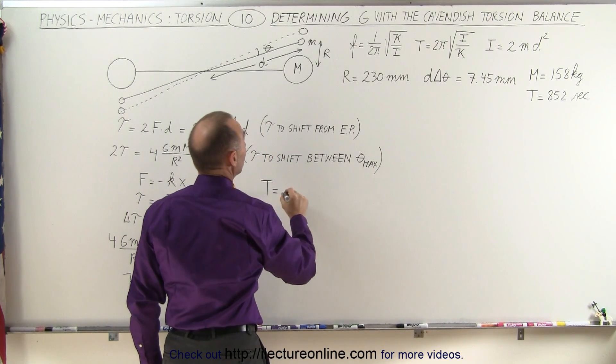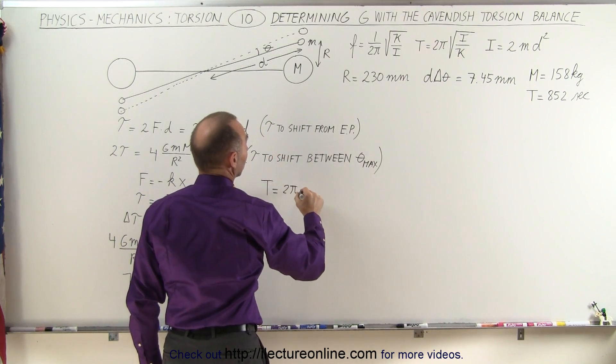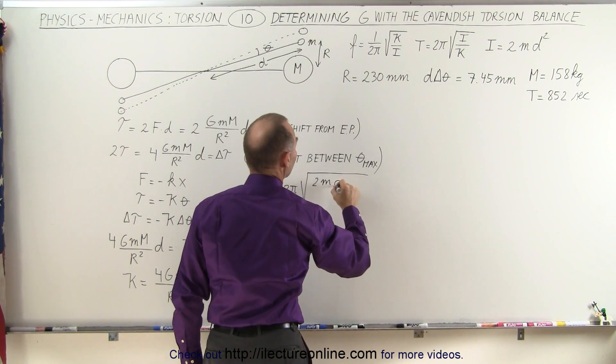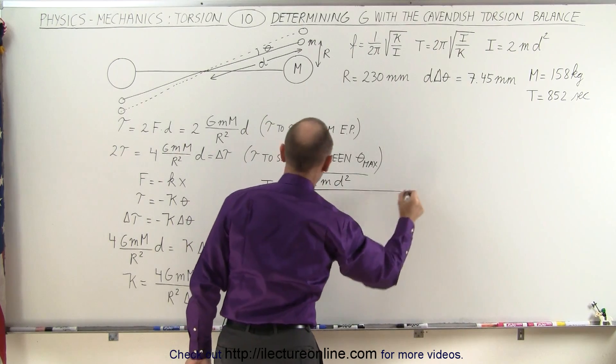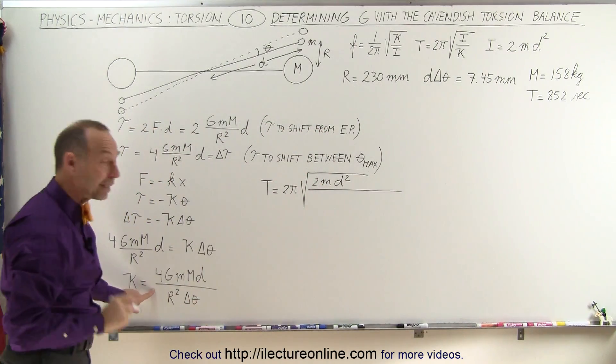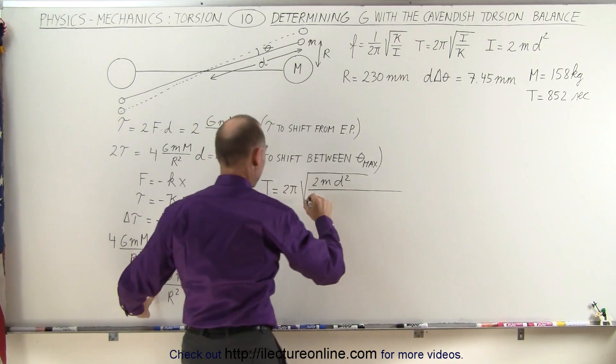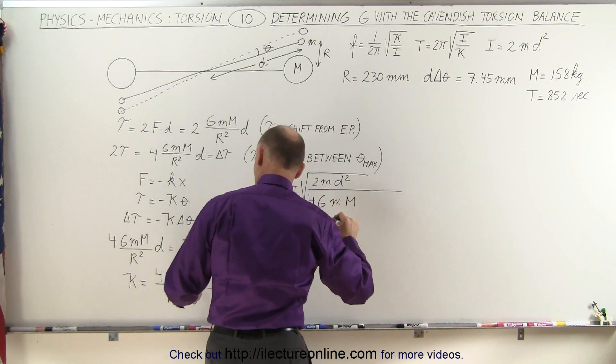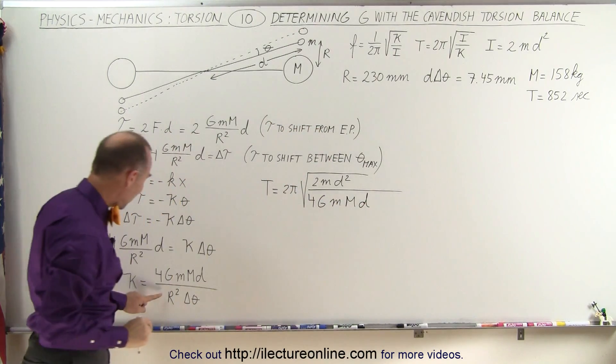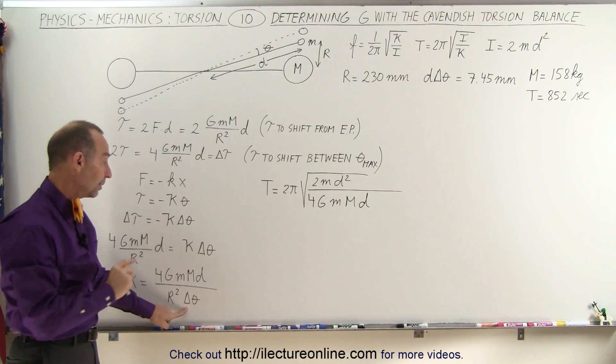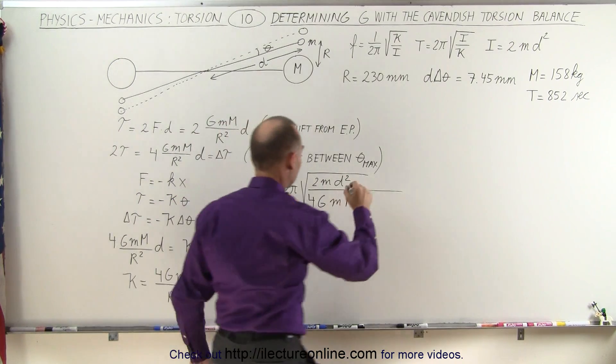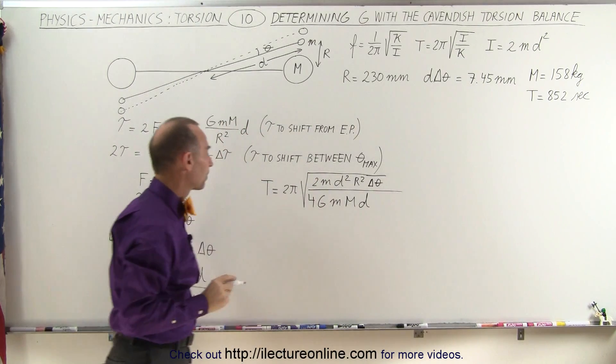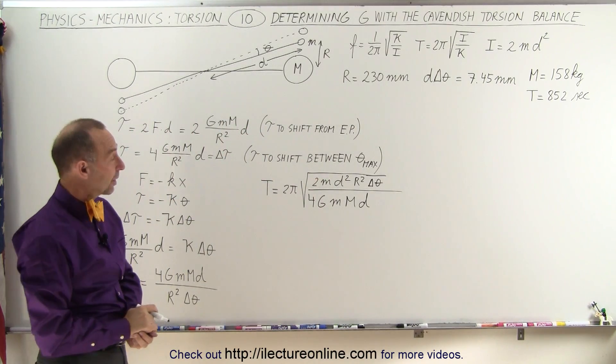So let's do that. The period is going to be equal to 2 pi times the square root of I, which is 2 times the small mass times D squared, divided by, in the denominator we get Kappa, which is going to be 4G times small M times big M times D to the first power, divided by R squared times delta theta. But of course, that will come to the numerator. That will give us R squared times delta theta in the numerator.